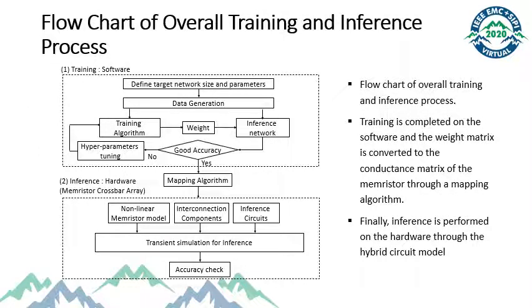This is the detailed overall process of training and inference. In training, first, define the target network size and parameters. After the data generation, training data is used for the general DNN training algorithm. Then, an initial weight matrix is obtained. It is used in test inference with random inference data for checking the accuracy of the network. If the desired accuracy is not achieved, retrain the weight matrix by tuning the hyperparameters. After several iterations, the training process ends when a high enough accuracy is achieved.